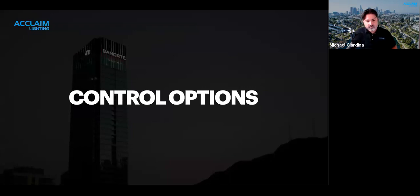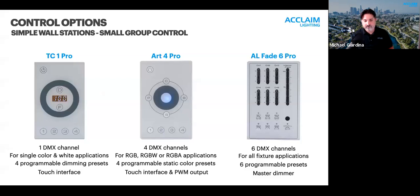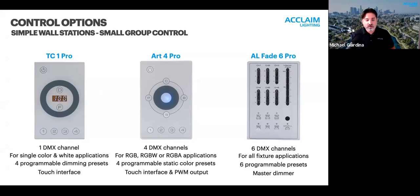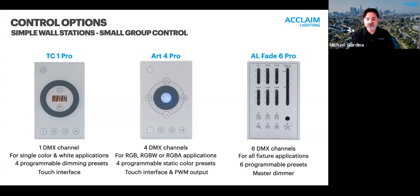Now we're going to discuss some of the specific control solutions from Acclaim Lighting, ranging from a basic wall station to advanced network systems. Starting with the simplest DMX controls we offer — small single-gang wall stations. These are ideal for group control applications where you're limiting control to a single channel or group of channels, great for small projects with a single isolated run of product in a room.